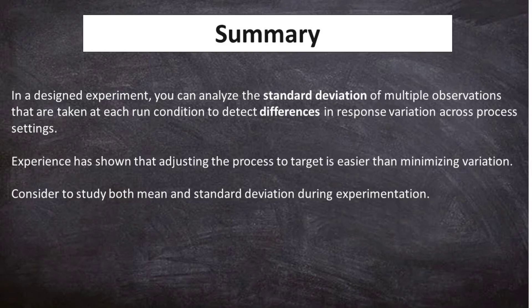In a carefully planned experiment, the analysis of standard deviation for multiple observations at each run condition can reveal variations in response across different process settings. It has been observed that it is often easier to adjust the process to meet a specific target than it is to minimize variation. Therefore, it is important to study both the mean and standard deviation during experimentation. By doing so, researchers can gain a comprehensive understanding of how process settings impact not only the average outcome, but also the consistency of results.